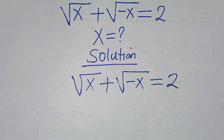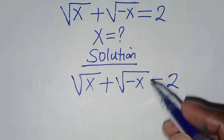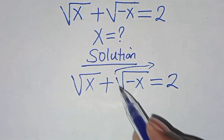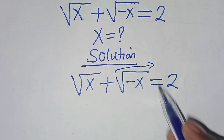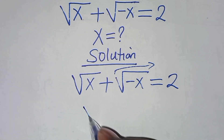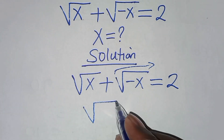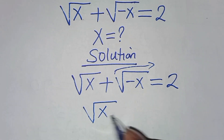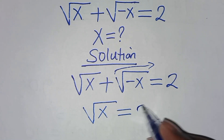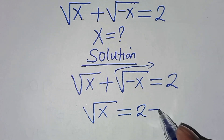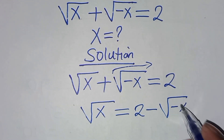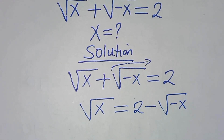The first step: let's take the square root of minus x to the right hand side, so that we have square root of x equals 2 minus the square root of minus x.